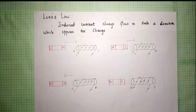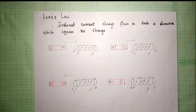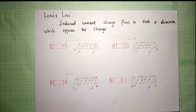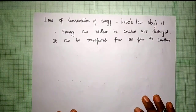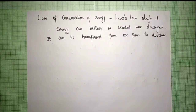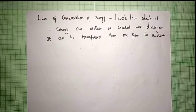The North Pole and South Pole attract. Moving in reverse creates an opposition force. Work is done against this opposition force, and that work is converted into electrical energy. This is the conservation of energy — energy is transferred from mechanical form to electrical form. Lenz's law obeys the law of conservation of energy.